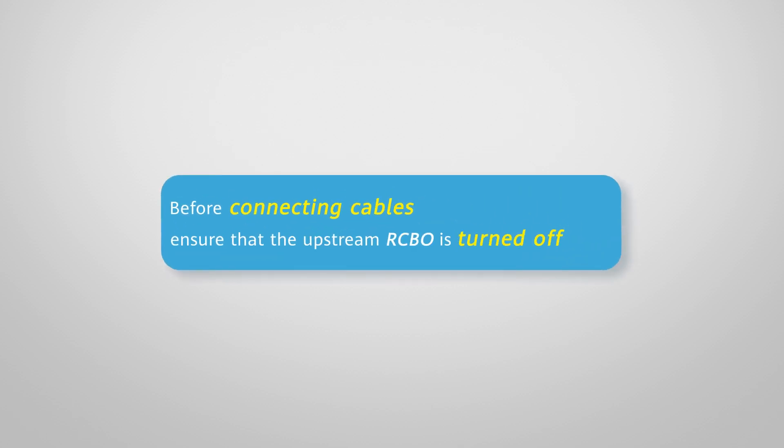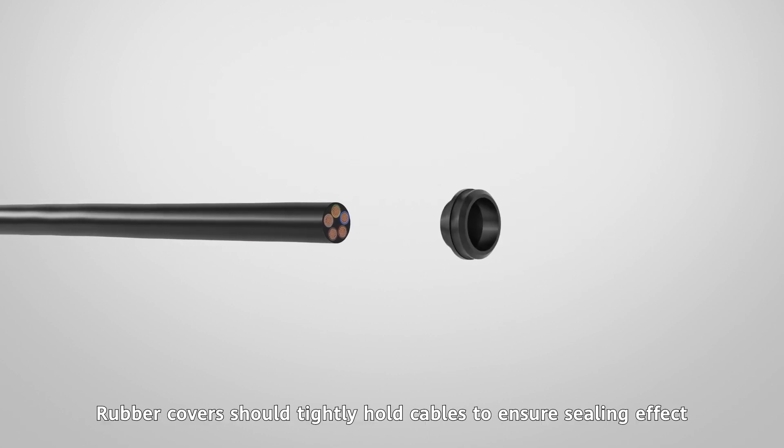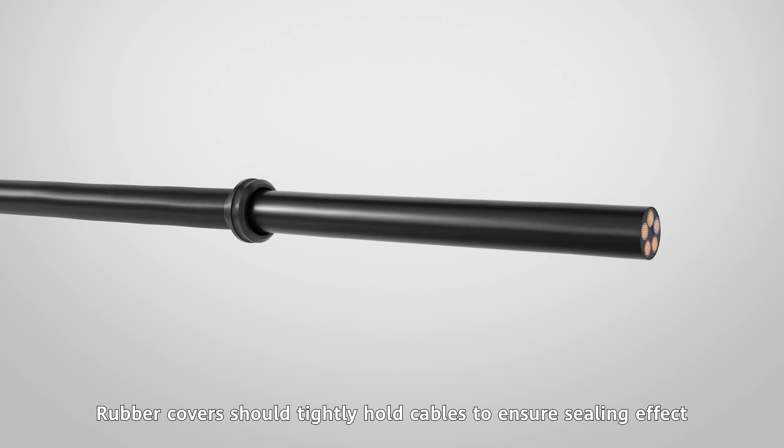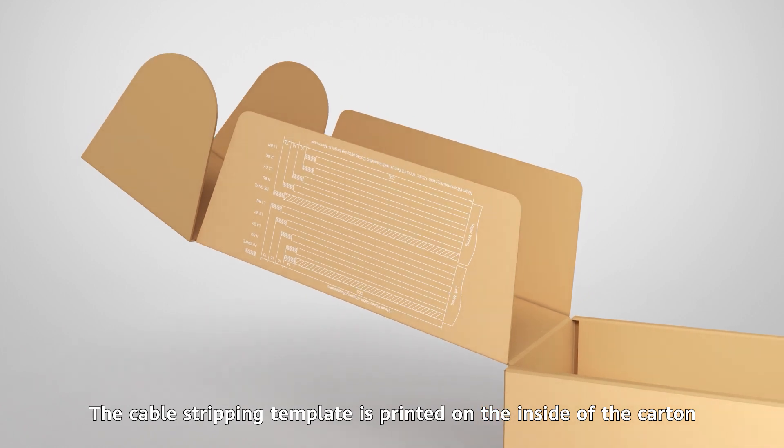Use scissors to cut the rubber covers to fit the cable sizes. Rubber covers should tightly hold cables to ensure sealing effect. The cable stripping template is printed on the inside of the cardboard. Strip the cable to the recommended length.